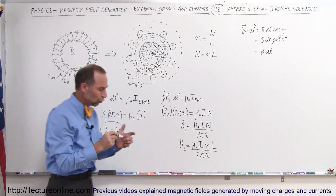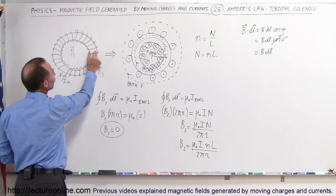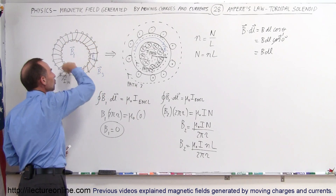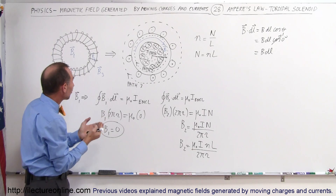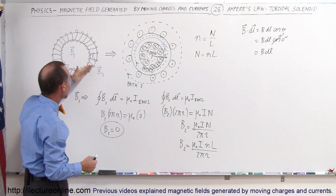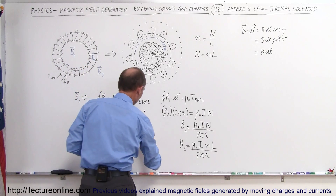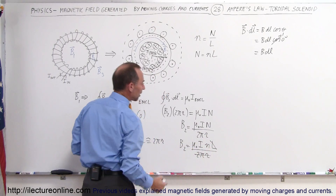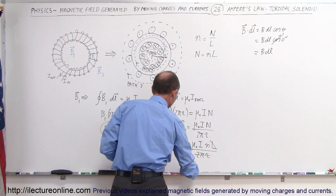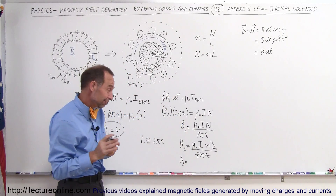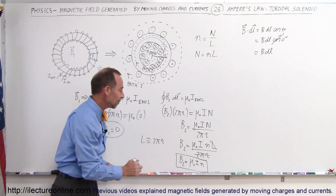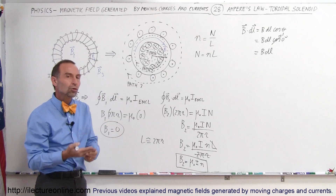If we assume the tube thickness is relatively small compared to the radius, then L is approximately equal to 2πr regardless of how large R is, as long as you're inside the tube. So L cancels with 2πr, and we find — perhaps surprisingly — that the magnetic field inside the toroidal solenoid is exactly the same as inside a straight solenoid: B = μ₀ × I × n.